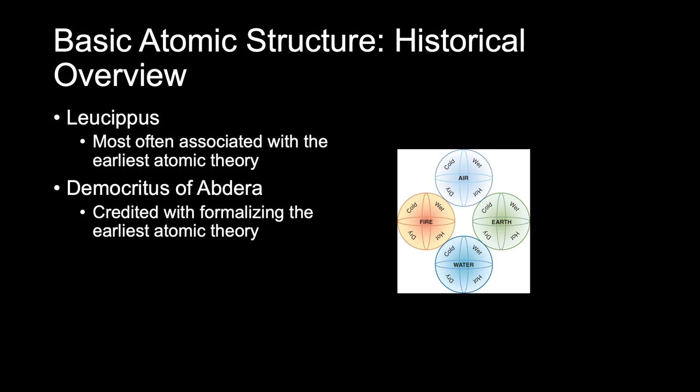Democritus lived from about 460 BC to about 370 BC. The name atom comes from the Greek word atomis, meaning indivisible. Democritus hypothesized that all things were made of tiny, indivisible structures called atoms. He believed that these atoms were indestructible and differed in their size, shape, and structure. He also theorized that the nature of the object depended on its atoms.